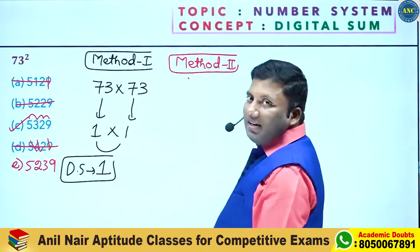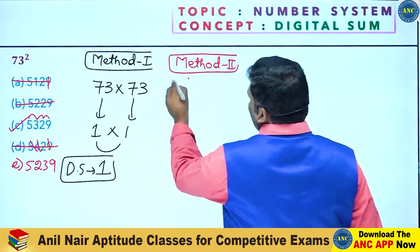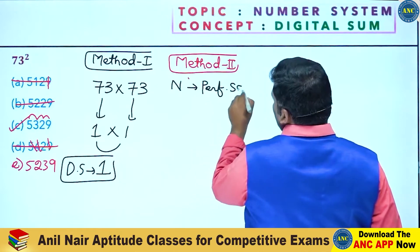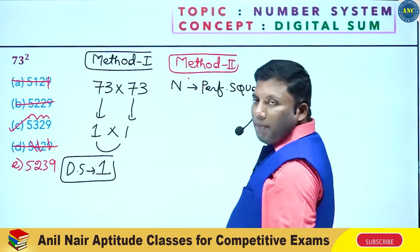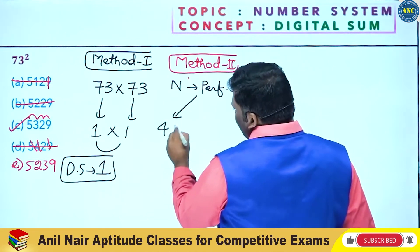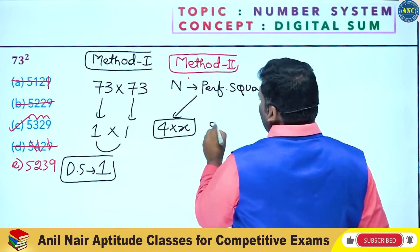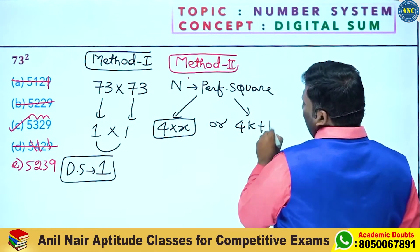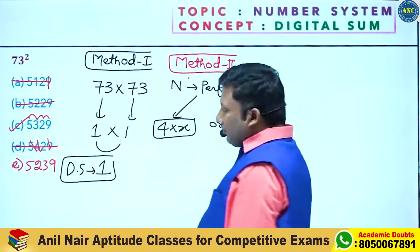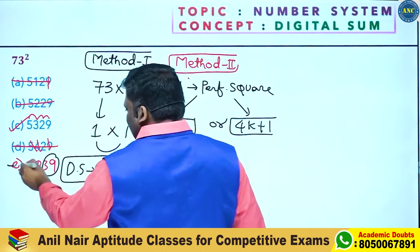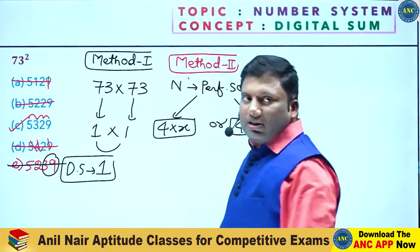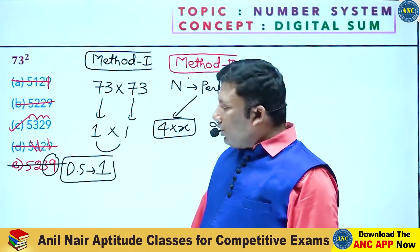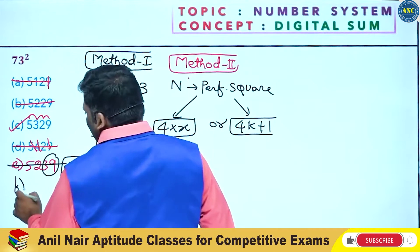Method 2. 73 square is 73 into 73. It is a perfect square. What formula is applicable — either 4 into something, or 4 into something plus 1. Testing: 39 into 4 gives 9's are 36 plus 3, so it is 4K plus 3.